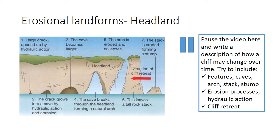Looking at the diagram, at number one there would have been a joint or a fault in that resistant rock. Through time, the process of hydraulic action has blasted open that crack, forcing it to be a small opening. At number two, this small opening becomes bigger and bigger through the processes of abrasion and hydraulic action, widening it to form a cave.